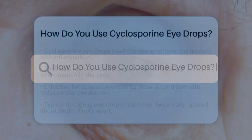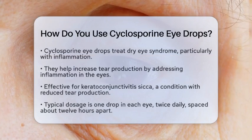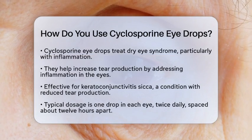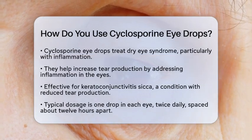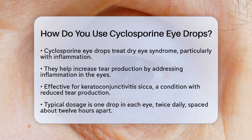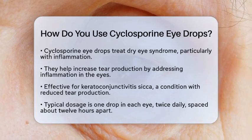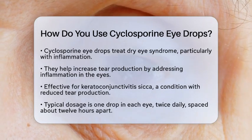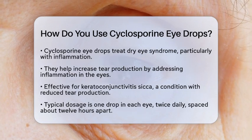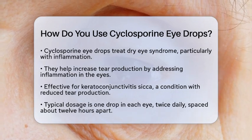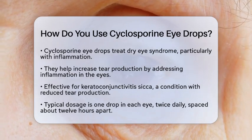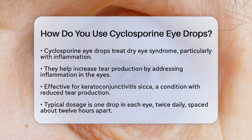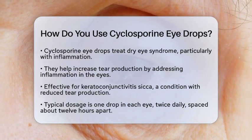How do you use Ciclosporine Eye Drops? If you are dealing with dry eyes and have been prescribed Ciclosporine Eye Drops, you might be wondering how to use them effectively. Let's break it down step by step to ensure you get the most benefit from this treatment. Ciclosporine Eye Drops are primarily used to treat dry eye syndrome, especially when inflammation is present. This medication helps increase tear production by addressing the underlying inflammation in your eyes. It is particularly effective for a condition known as keratoconjunctivitis sicca, where tear production is reduced.